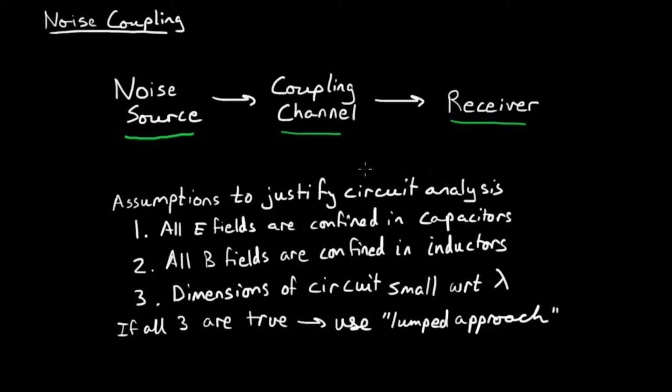You can sever or reduce the noise at any point along the way, and in good practice you should be trying to go for all of them. I'm going to go into some description about the main coupling channels for electromagnetic type of noise and some solutions for reducing them. But before I get into that, I want to mention some assumptions that I'm going to make.